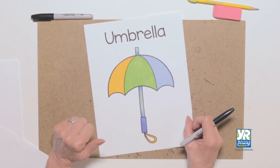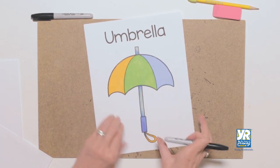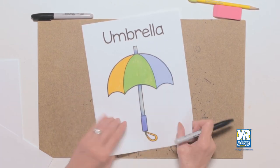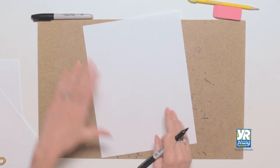Look at this great umbrella we're going to draw. It's got lots of curved lines, lots of arches, and it's going to be super easy to do. So let's get started. Now the outside shape for our umbrella is like a big rainbow.